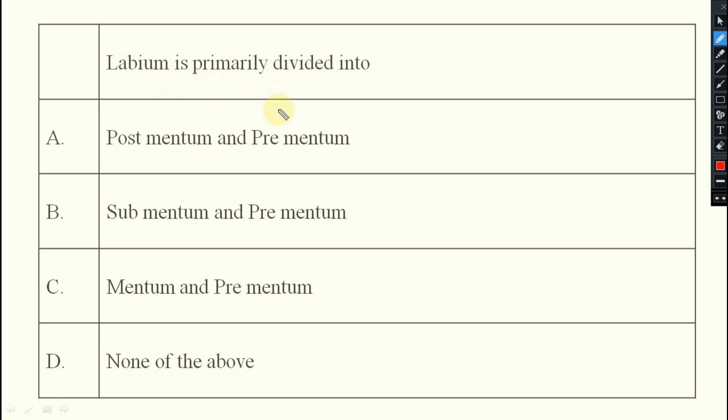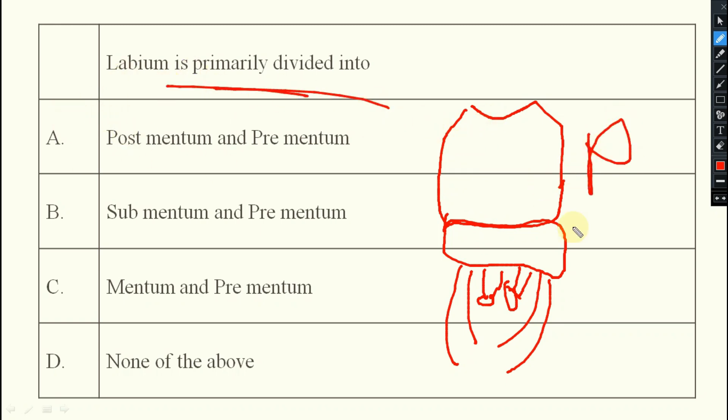Next. Labium is primarily divided into what? You see labium is in such a way that you try to remember, like this it will be there. So what is labium? You see, labium is primarily divided into postmentum and prementum. This postmentum is again divided into submentum and mentum. So labium is primarily divided into postmentum and prementum. Option A is the right answer, postmentum and prementum.